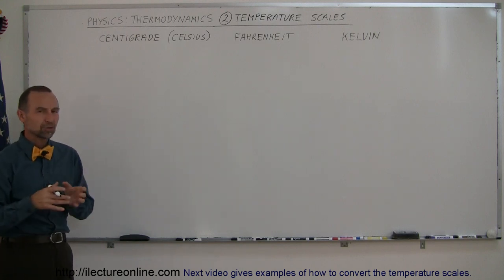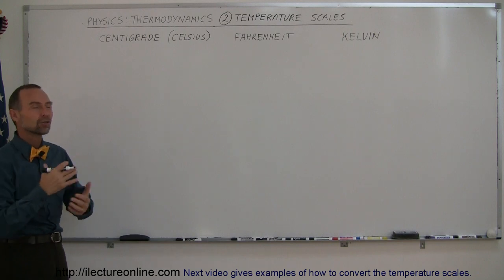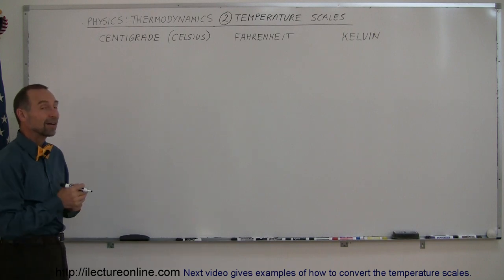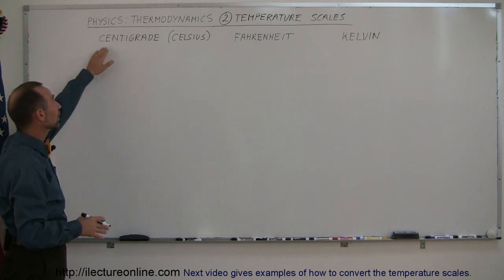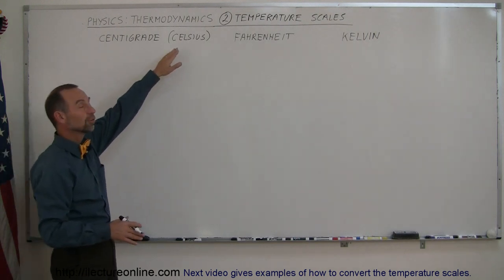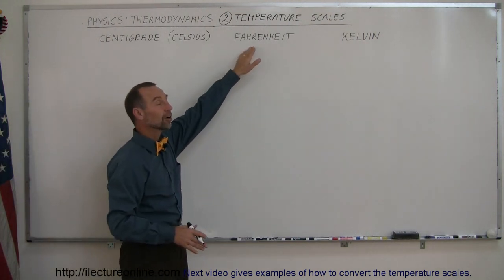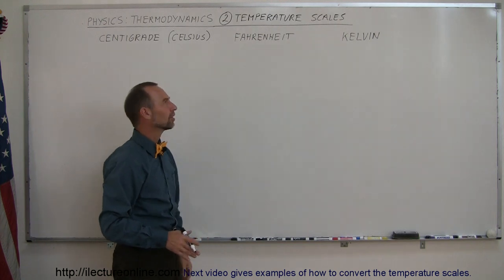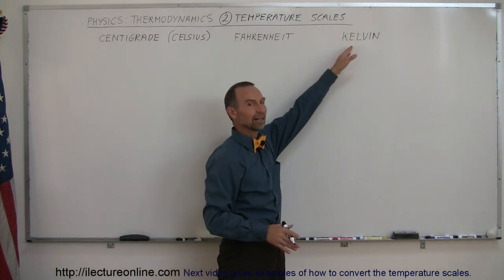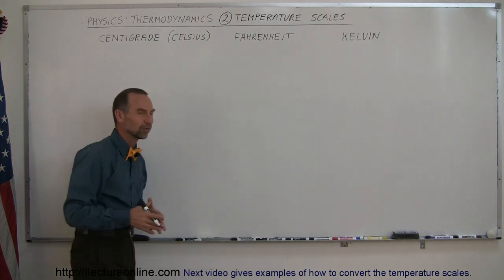So in order for us to be able to measure the temperature of an object, the relative hotness or coldness of an object, we have three main temperature scales. One is called centigrade scale, or also known as Celsius. The other one is the Fahrenheit scale, mostly used here in the United States. And then we have the Kelvin scale, which is used mostly in scientific purposes.